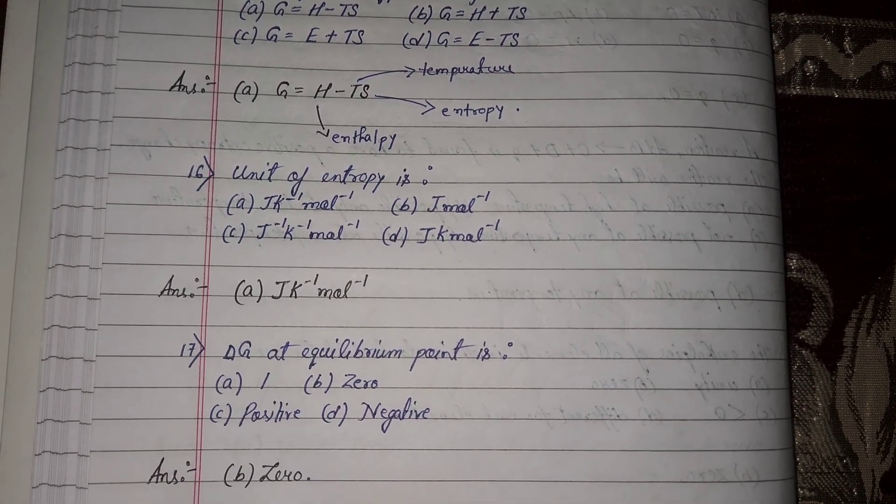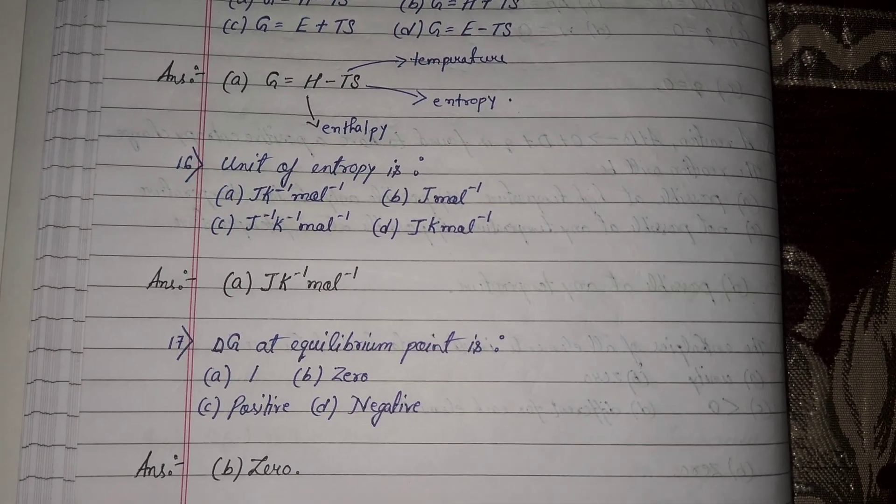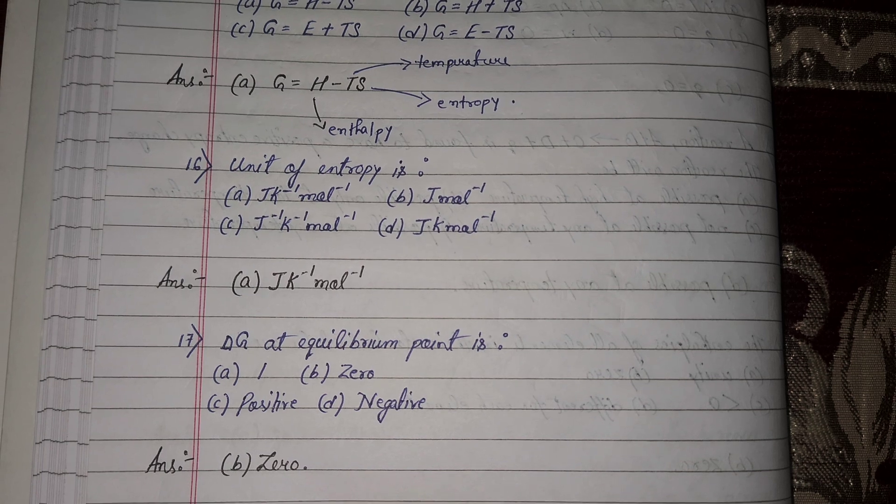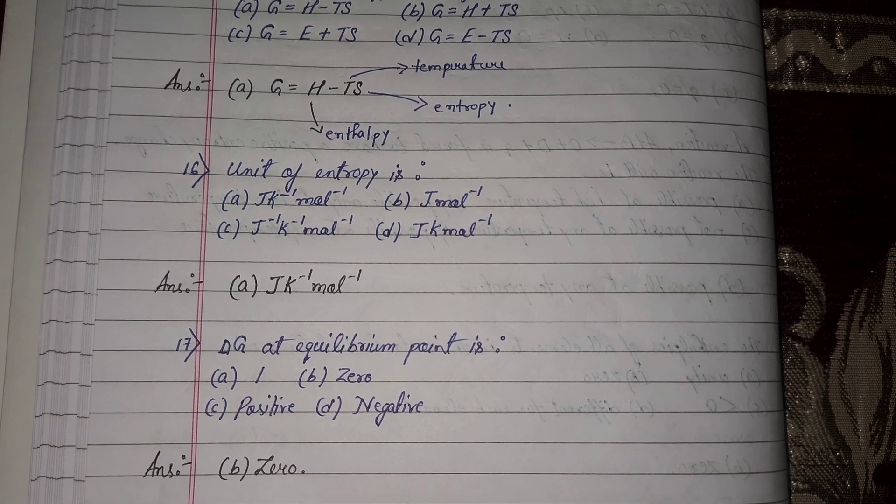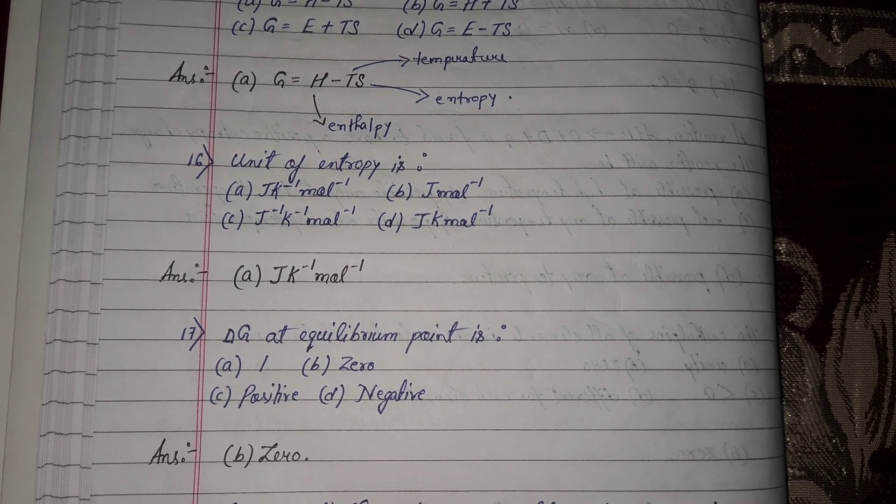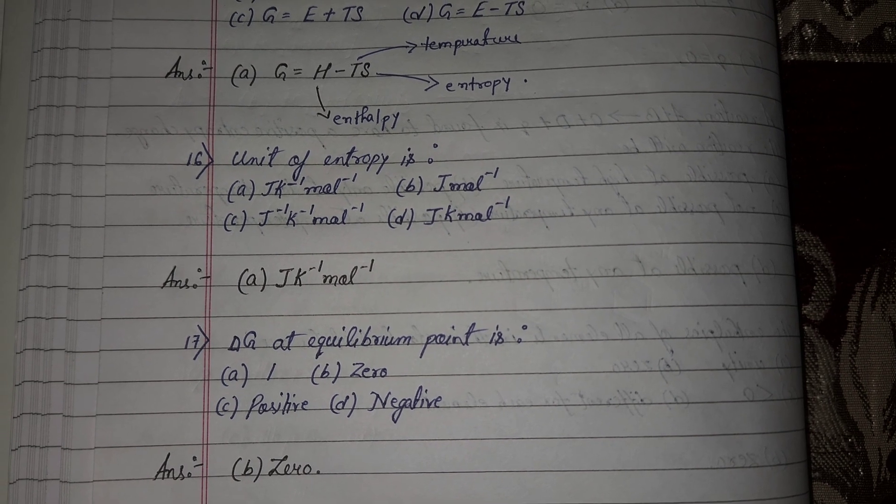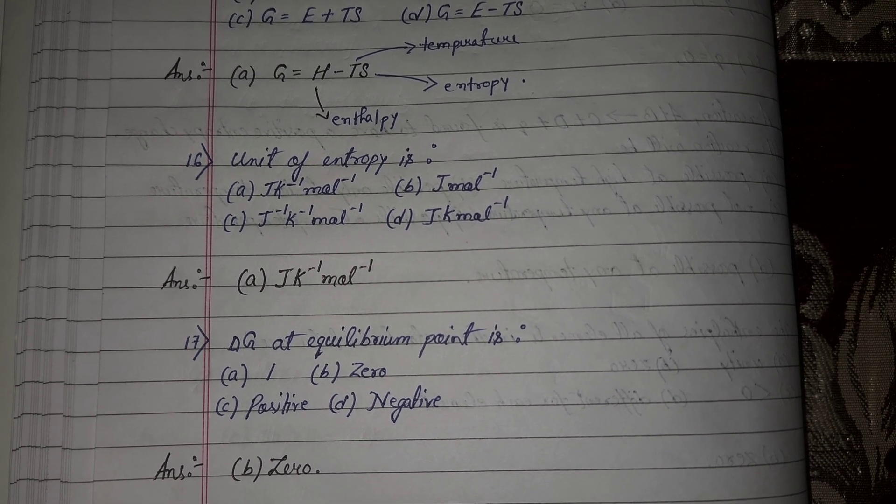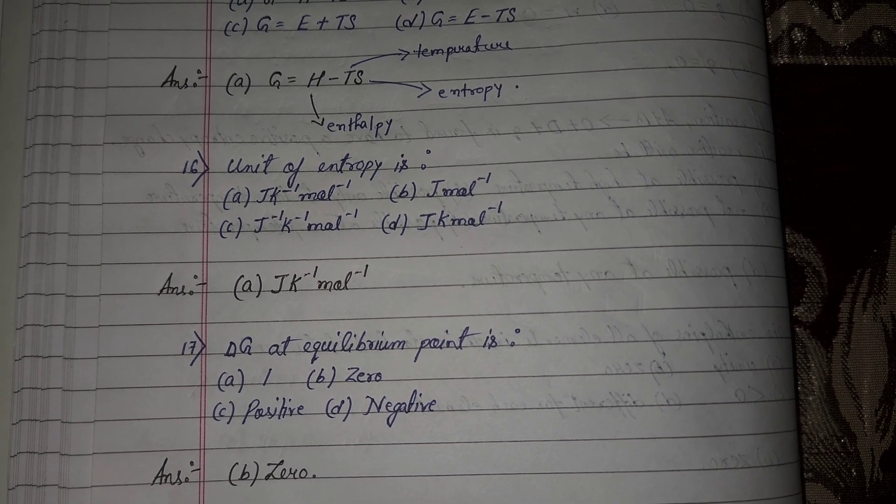Next question number 16, unit of entropy is Joule Kelvin inverse mole inverse, that is Joule per Kelvin per mole. Next question number 17, delta G at equilibrium point is 0, option number B.